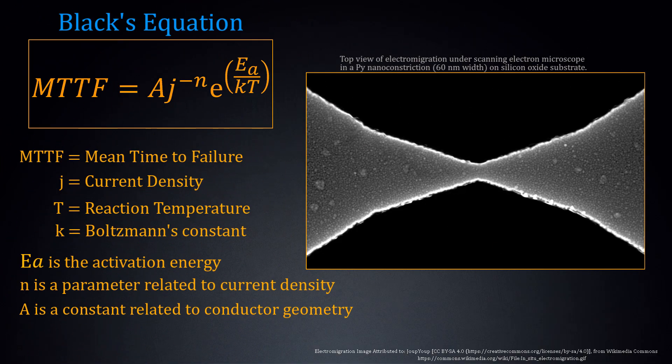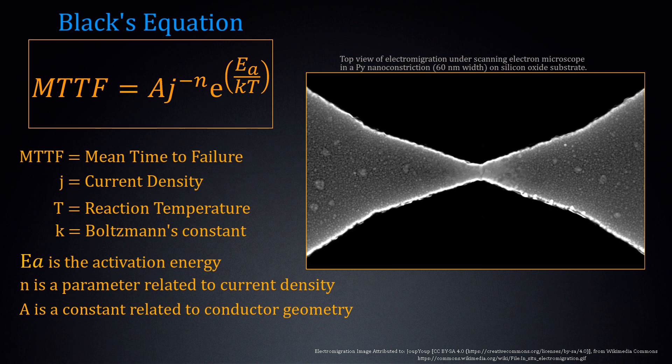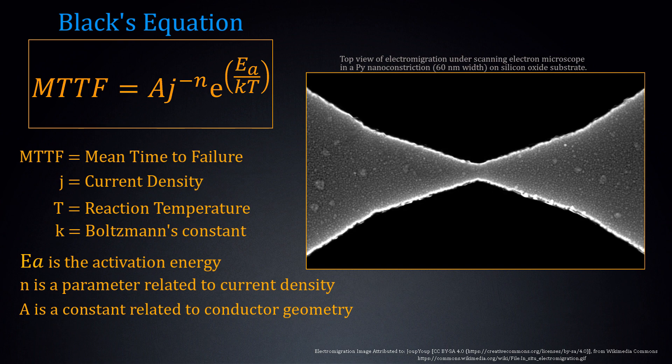This electromigration effect is often modeled by Black's equation, a probabilistic model that predicts the mean time to failure, or MTTF, as a function of the current density and the temperature.